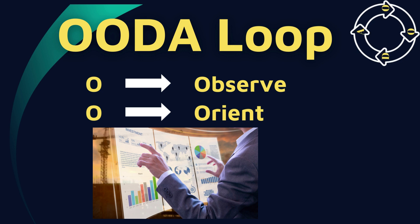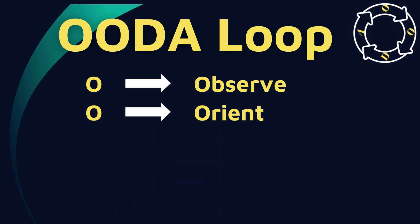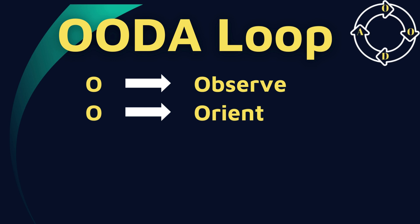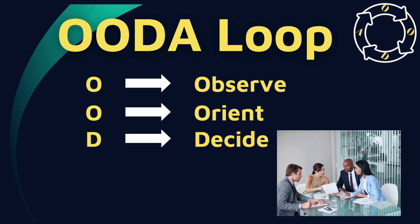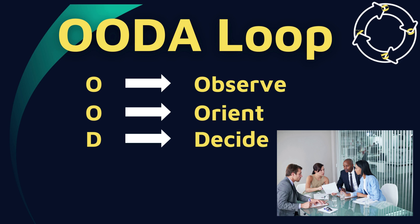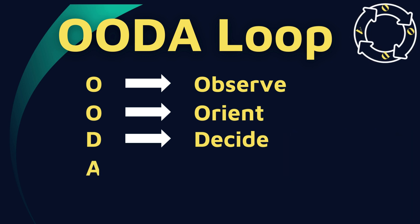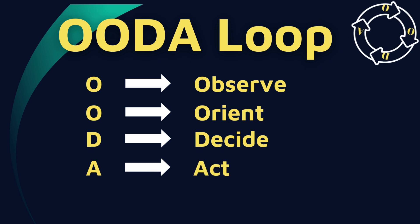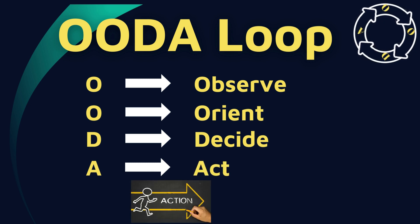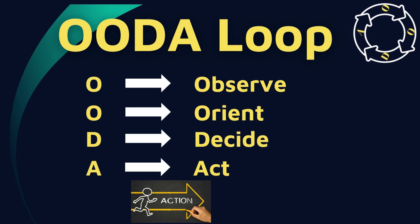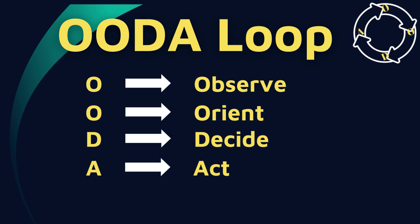The 'D' stands for Decide — we need to make a decision about how to address the problems we found. The last letter 'A' stands for Act — we implement the decision taken in the previous step and monitor the results. This is how DevOps teams use the OODA loop decision-making cycle to solve customer problems.